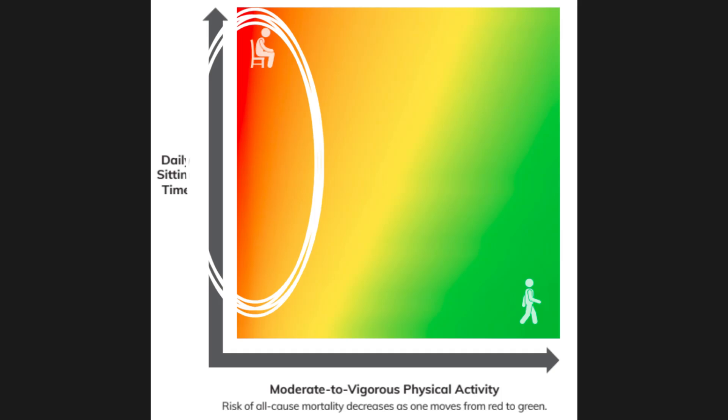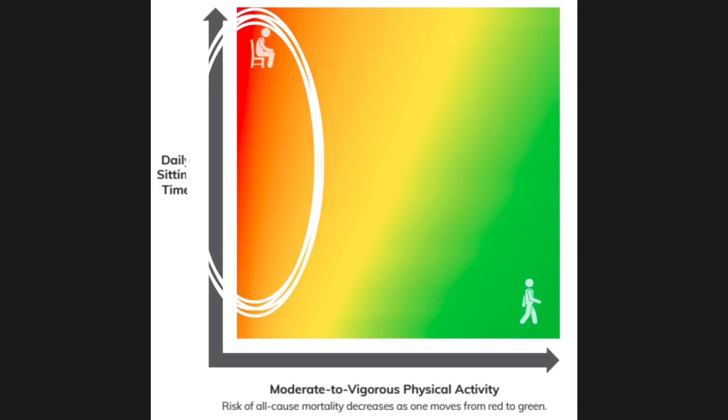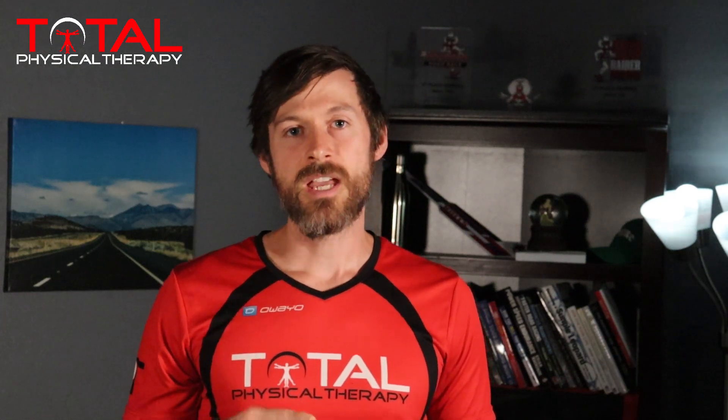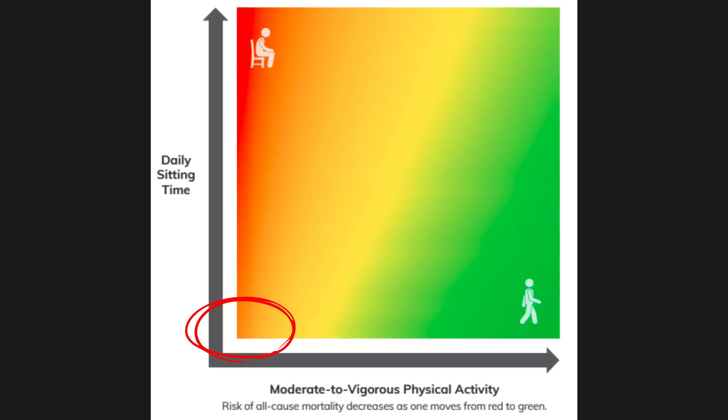Another very interesting part of this graph is that if you look at the very left side, there is no moderate to vigorous activity shown. If you are somebody who never gets any moderate to vigorous activity, this is actually a problem — you'll notice that the whole left portion of the graph, no matter how much time you spend sitting, is actually all red. So whether you spend a lot of time sitting or your whole day is light activity, you are still at a high risk of all-cause mortality.